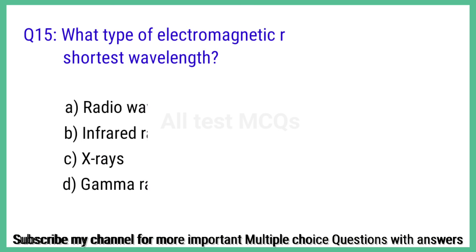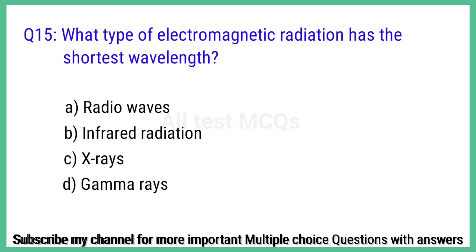Question number 15. What type of electromagnetic radiation has the shortest wavelength? The right answer is option D: Gamma rays.